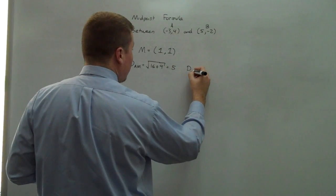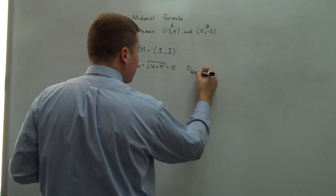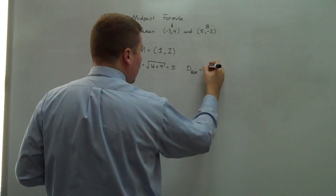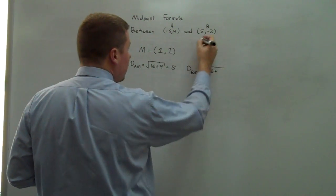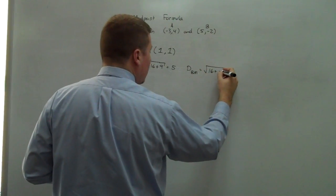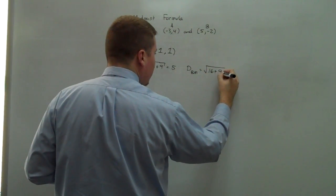the distance from B to M is going to be from 5 to 1. That's a distance of 4, so 4 squared is 16. The distance from negative 2 to 1 is 3, so 3 squared is 9.